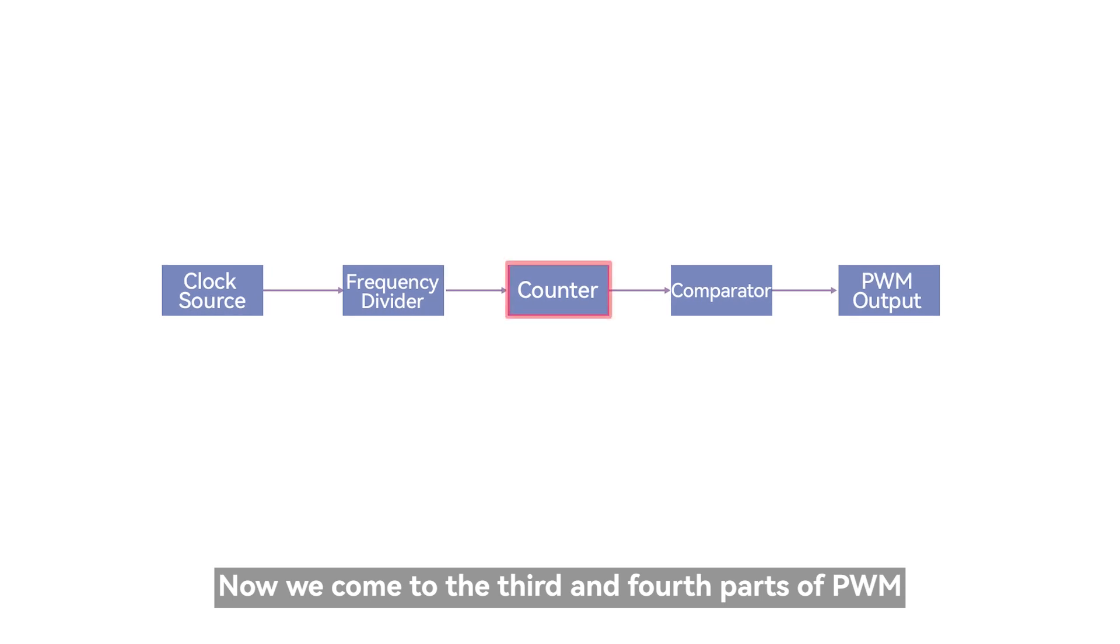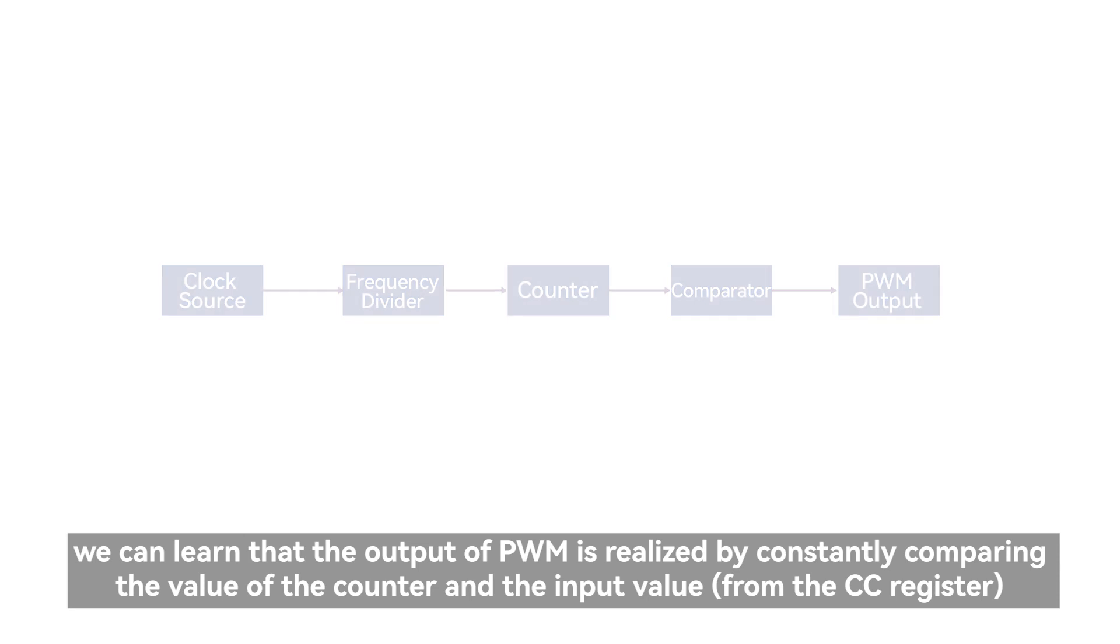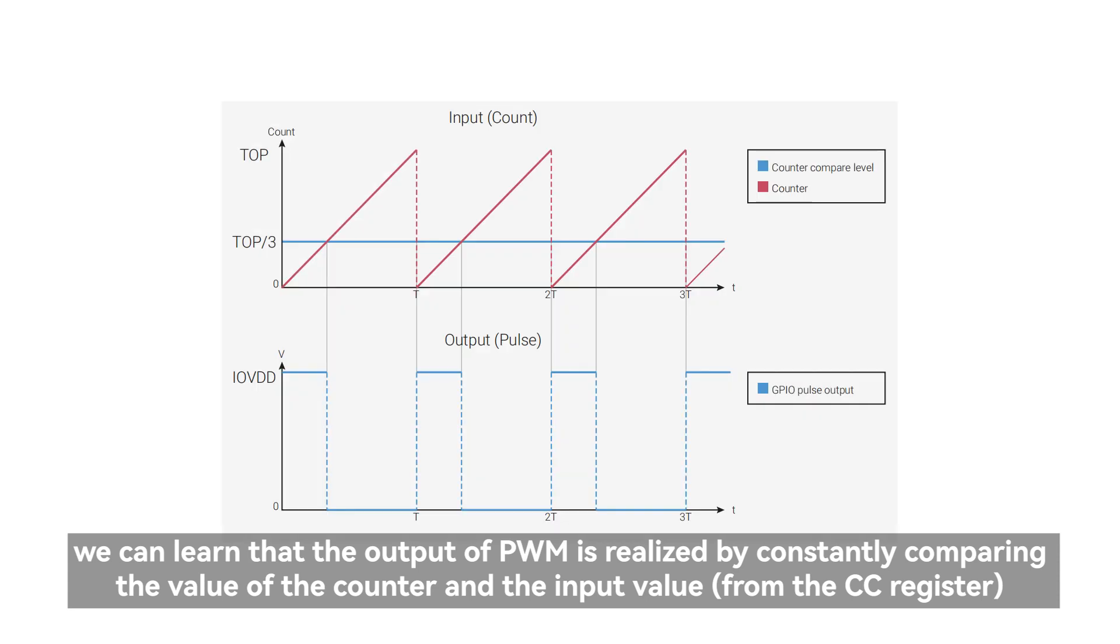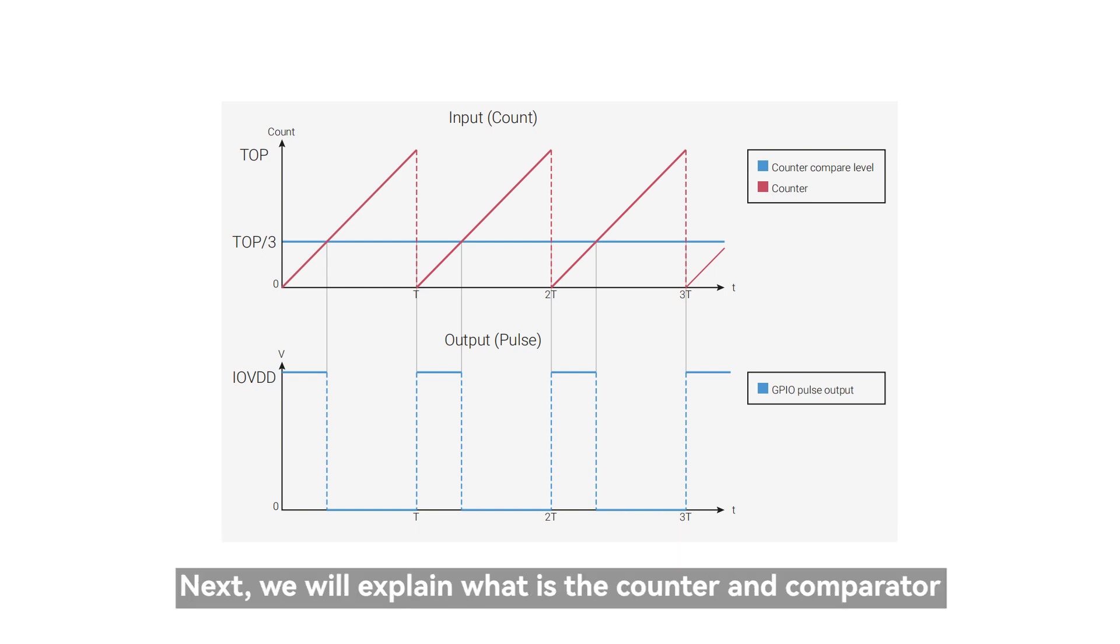Now we come to the third and fourth parts of PWM. As the flowchart explained above, we can learn that the output of PWM is realized by constantly comparing the value of the counter and the input value from the CC register. Next, we will explain what is the counter and comparator.